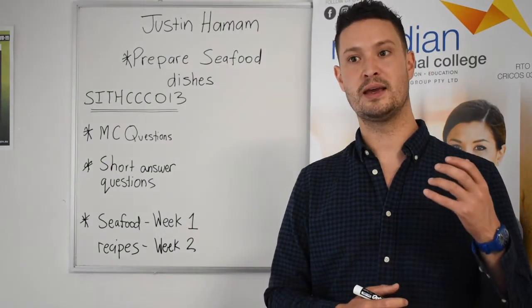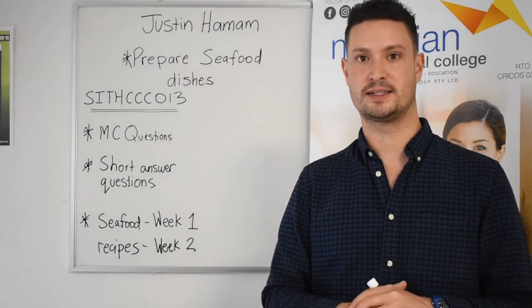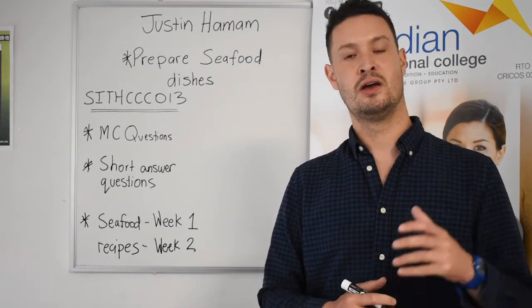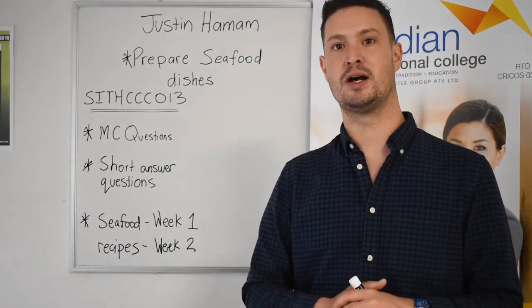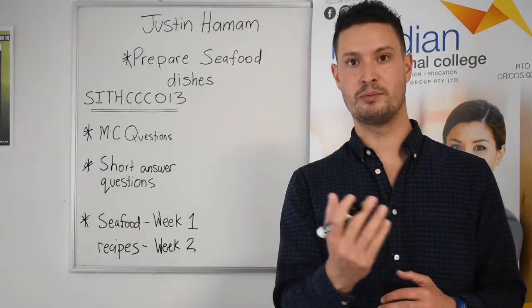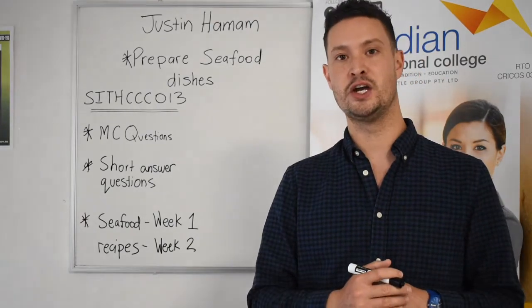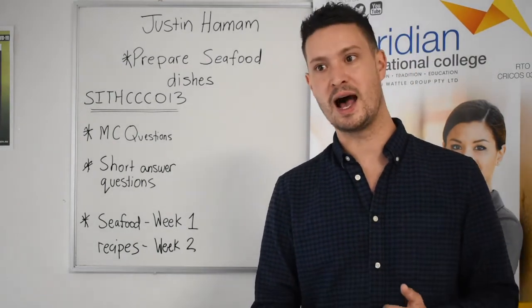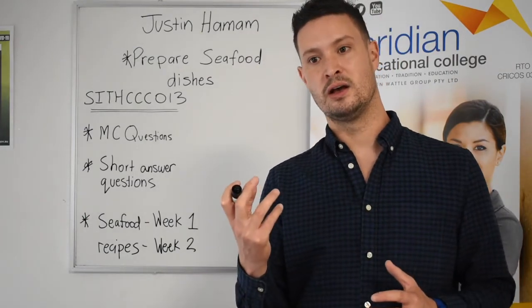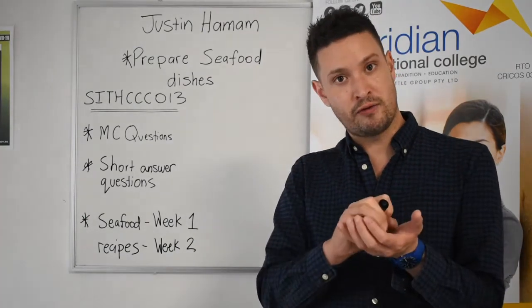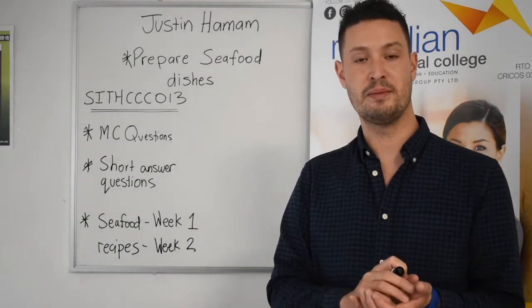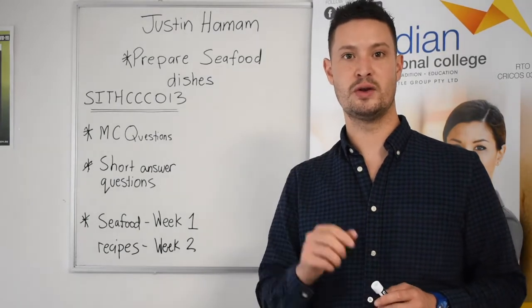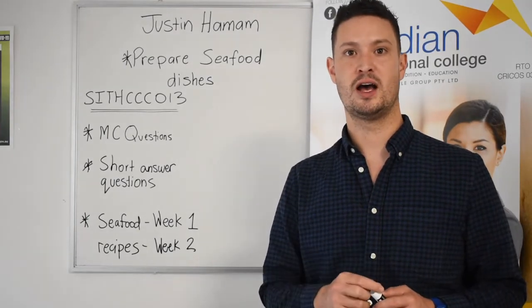You'll also be making Thai fish cakes using an oily fish — most likely some salmon. There's a different way of cooking these: you'll actually be using the food processor. We'll put some really great Asian flavors in — chili, garlic, and ginger. The mixture will be formed into small disc shapes, cooked off, and served with a nam jim, which is an Asian Thai dressing.